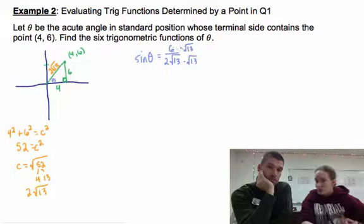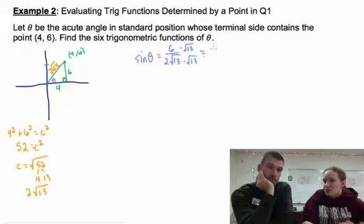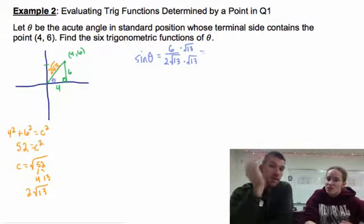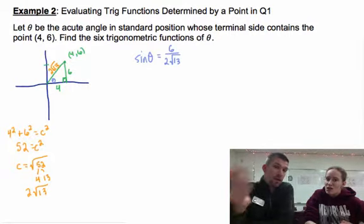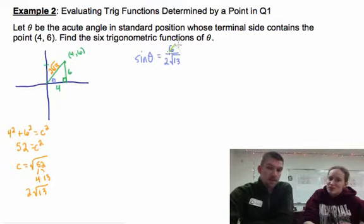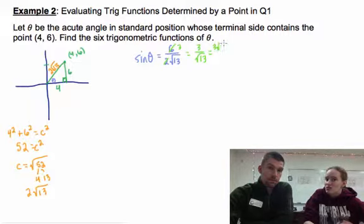If you do multiply by the 2, that's fine. You'll just end up having to simplify. Well, 2 reduces with 6 as well, so that just makes it 3. Okay, so this is 3√13. If you're not rationalizing, that's your answer. If you are rationalizing, it's 3√13 over 13.